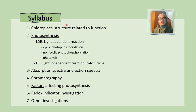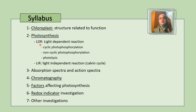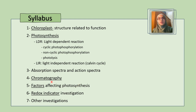First, as always, we have to look at the syllabus to find out what exactly we need to know to get as many marks as possible in our A-level bio exam. We have to talk about the chloroplast, its structures, and how these structures relate to its function. Then we'll talk about photosynthesis and its two stages: light-dependent reaction, which requires light, and light-independent, which does not. Then we'll cover absorption and action spectra, chromatography, factors affecting photosynthesis, redox indicator investigations, and other investigations.